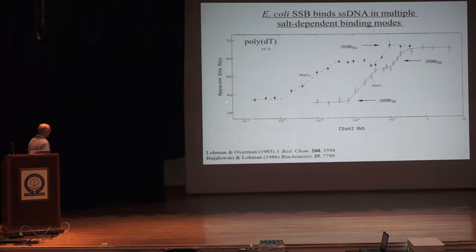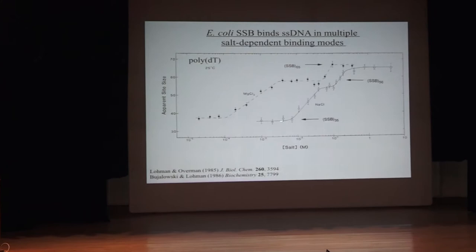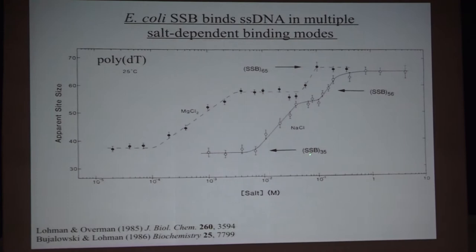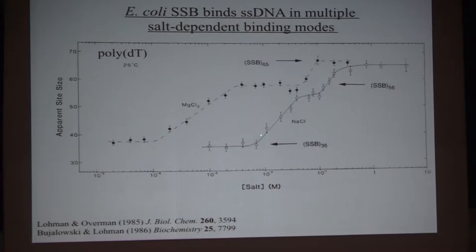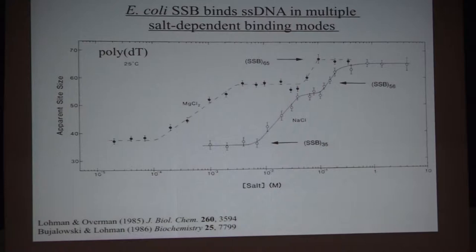These are some early studies on the binding of the protein to single-stranded DNA using poly-dT. The interesting observation is that the protein binds in multiple modes to single-stranded DNA, and those modes are salt-dependent. For example, in sodium chloride at low concentrations, the protein binds in what we call the SSB35 mode. As you raise the salt, it binds in an intermediate mode around 56, and then at high salt, 65. These numbers — 35, 56, and 65 — reflect the number of nucleotides that the tetramer occludes when it binds to single-stranded DNA. As you raise the salt concentration, it covers more DNA.